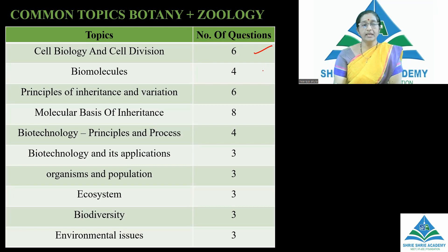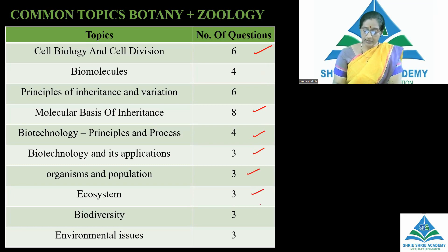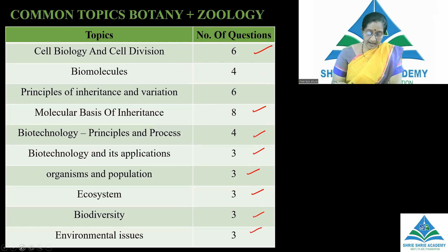Cell biology and cell division: 6 questions. Biomolecules: 4 questions. Principles of inheritance and variations: 6 questions. Molecular basis of inheritance: 8 questions. Biotechnology — principles and processes, and biotechnology and its applications. Organisms and populations: 3 questions. Ecosystem, biodiversity, and environmental issues also appeared. These are the questions shared in both botany as well as zoology.